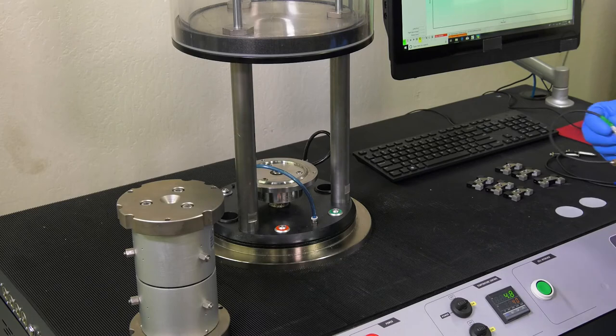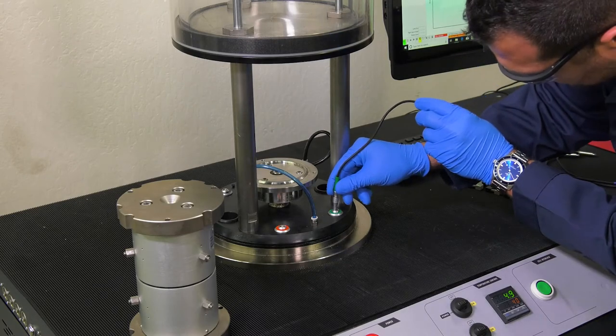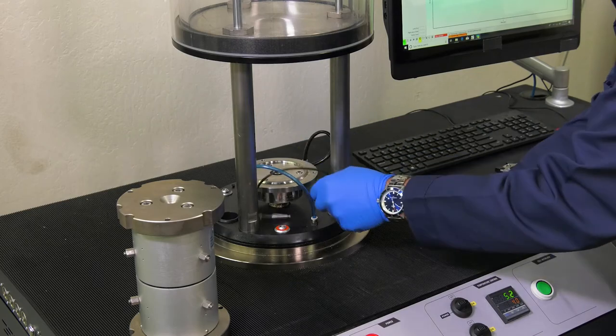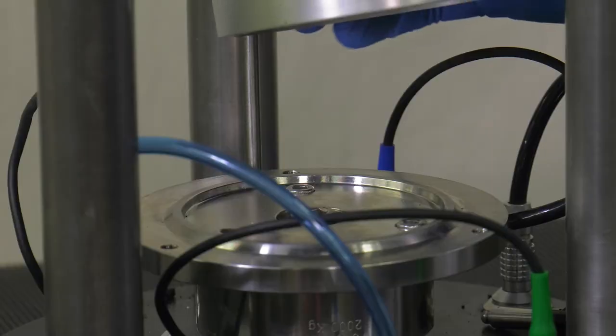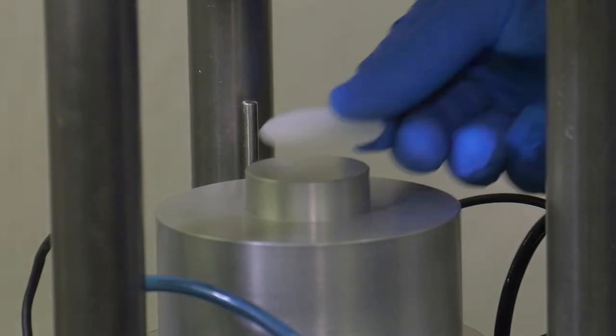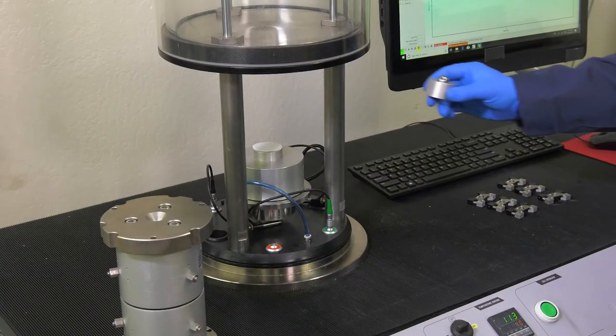Open the AMPT conditioning chamber and install the LVDT sensors and fixtures required for small scale specimen testing. Place the bottom platen, PTFE sheets, and the top platen with steel ball in the chamber.